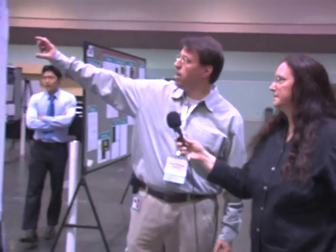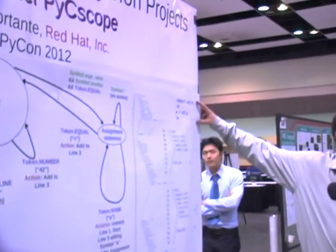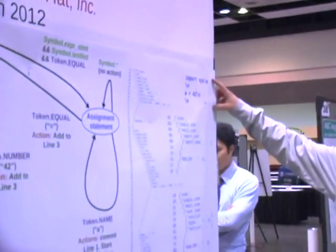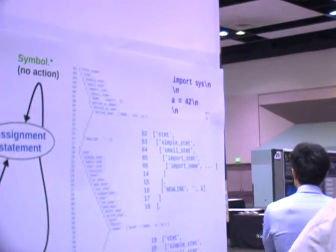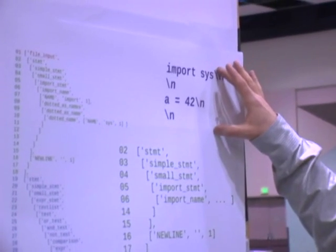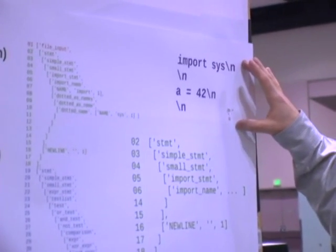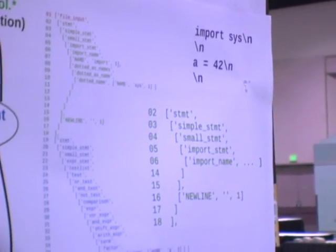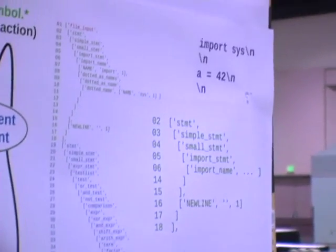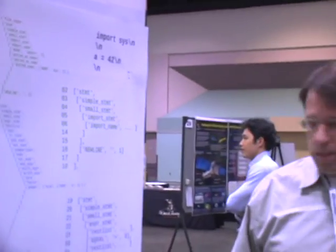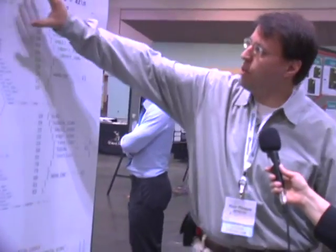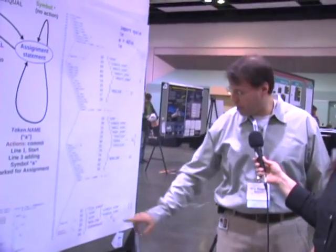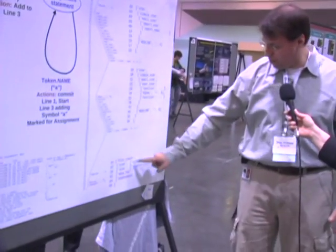What this is all about is there's a small four-line Python program right here. And this is the AST tree that's generated by the parser for that four-line program. What I'm doing is sort of breaking it down. This is how I learned the AST tree and what was going on. I broke it down into sort of collapsing these big boxes.